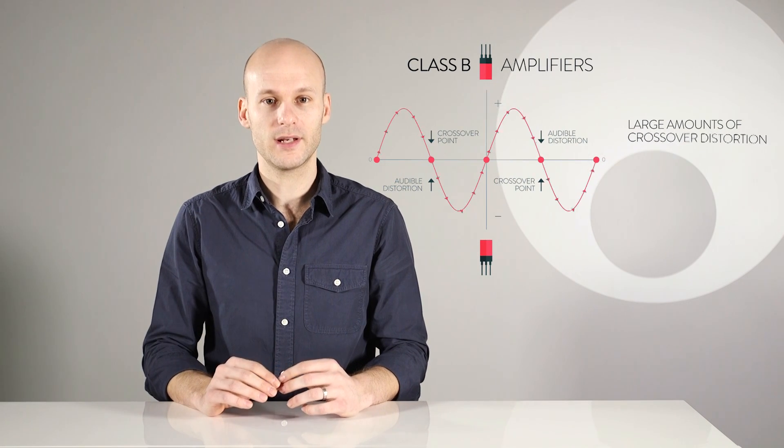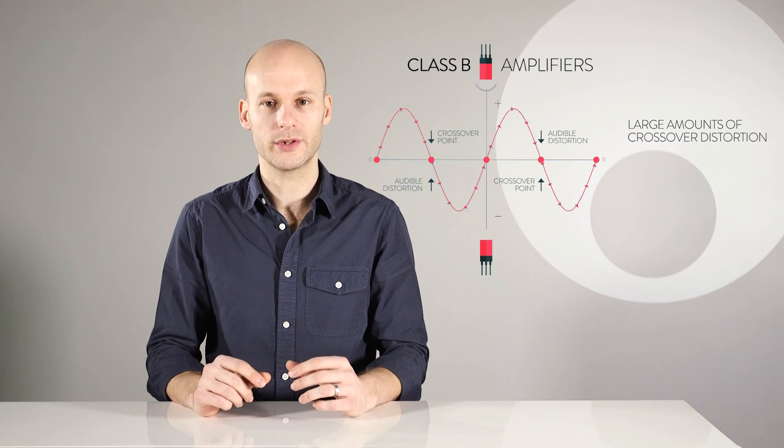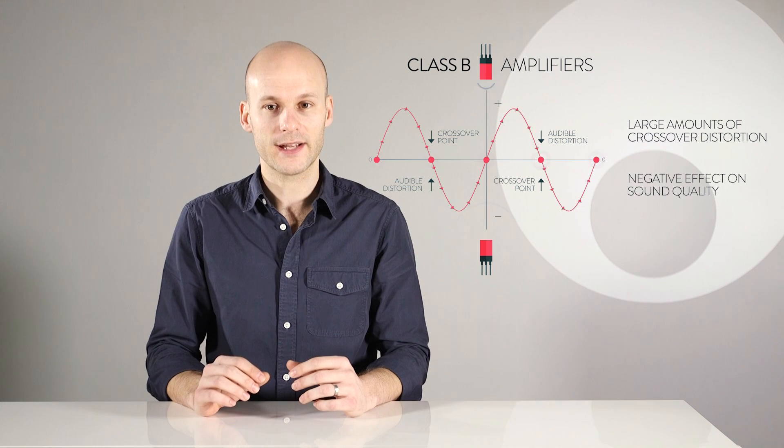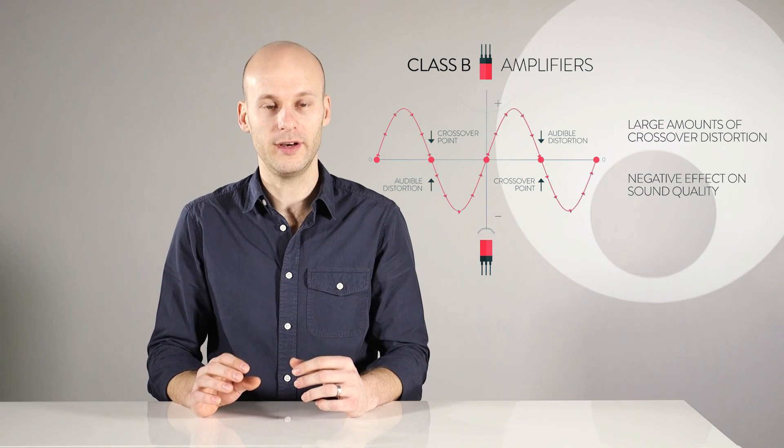Class B amplifiers exhibit large amounts of crossover distortion, which has a negative effect on the overall sound quality of the amplifier.